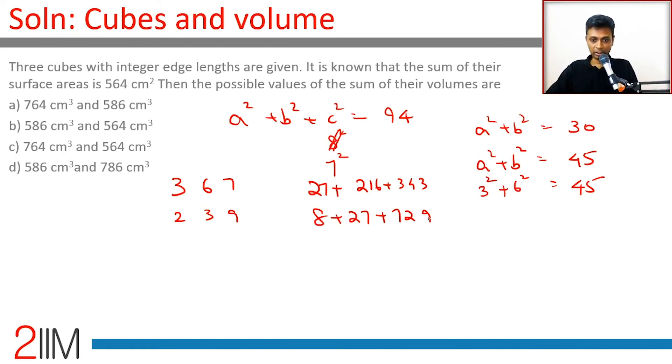15 plus 9 is 24, 4, 24 plus 2, 67, 764 is a possibility. Here 3 plus 6 is 9, 9 plus 7 is 16, 6, 1, 5 plus 1, 6 plus 2, 8. 3 plus 2, 5, 586, 764.